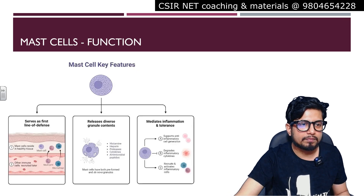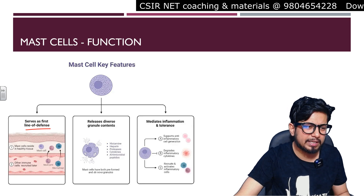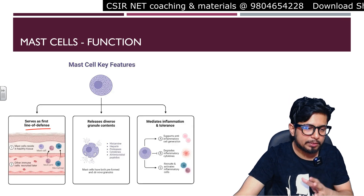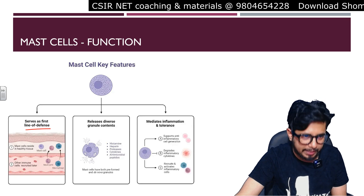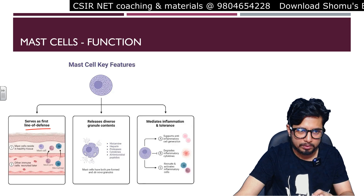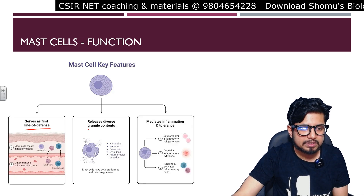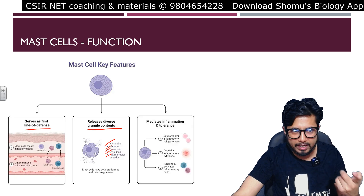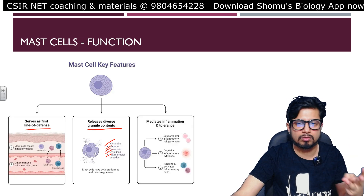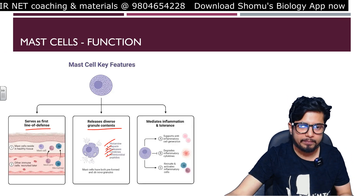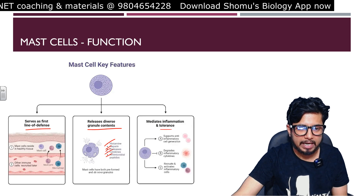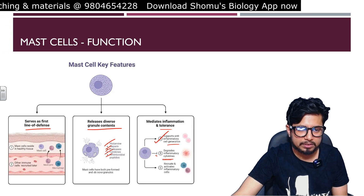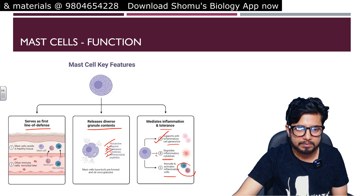The function of mast cells: they serve as an early defense layer present at the skin, mucus, and GI lining. They release diverse granules containing histamines, heparin, proteases, cytokines, and antimicrobial properties. They cause anaphylaxis, killing of microorganisms, tissue damage, and inflammation. They also mediate inflammation and support anti-inflammatory cell generation.